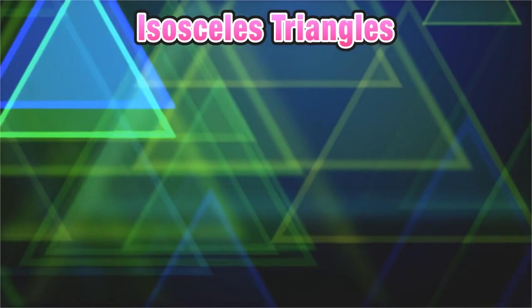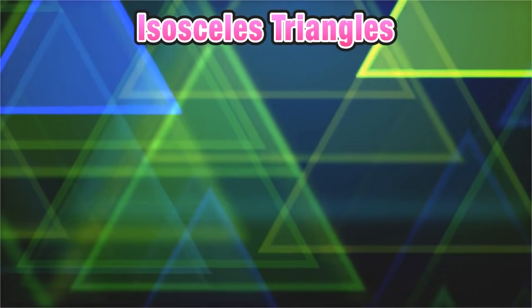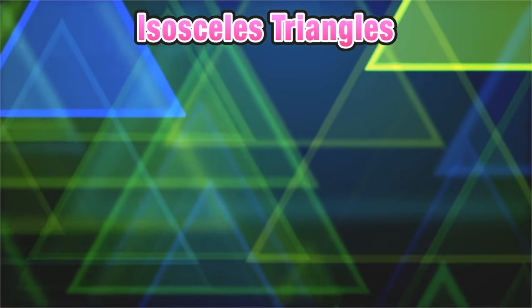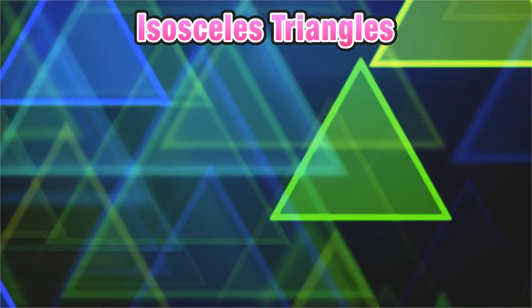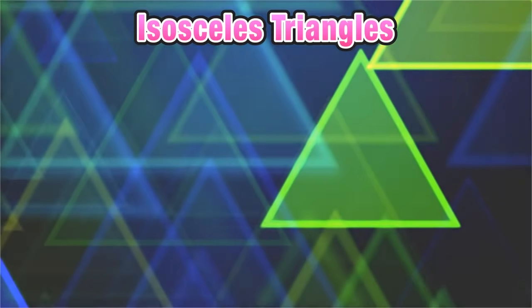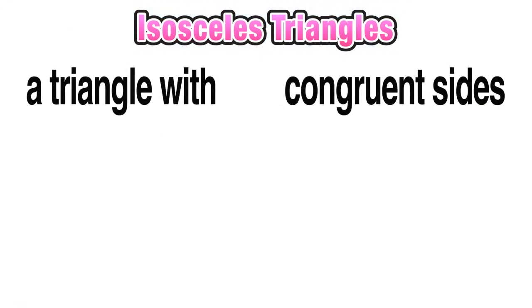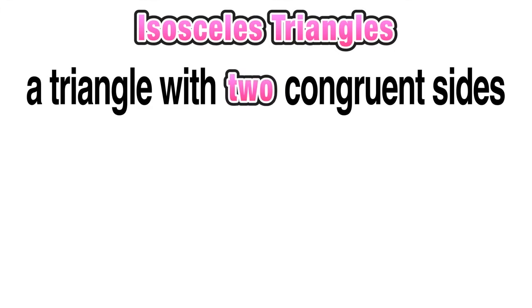Welcome everyone, thanks for joining me on this lesson. We're going to explore the properties of isosceles triangles. Let's start out with a basic definition: a triangle with two congruent sides is called isosceles.